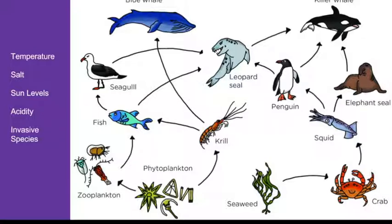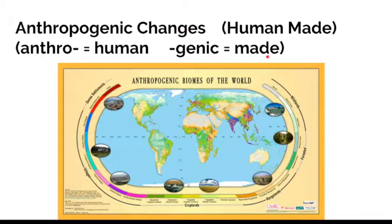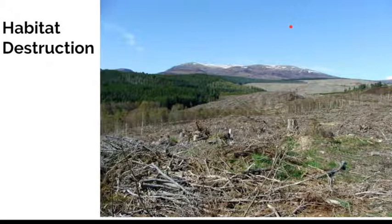However, large changes might permanently change the entire food web. In recent times, humans are a major contributor to change in ecosystems. We call these anthropogenic changes. "Anthro" means human, "genic" means made — so these are human-made changes.